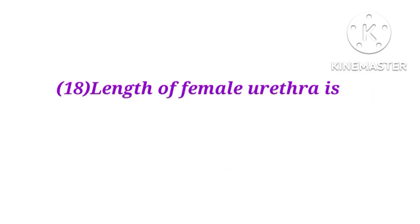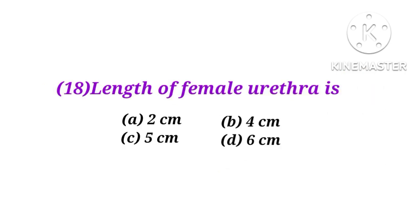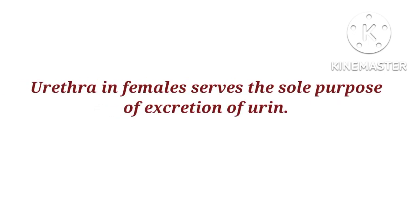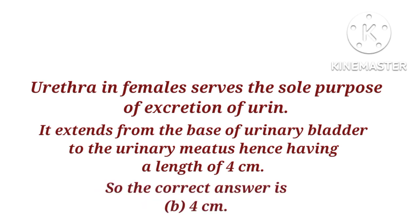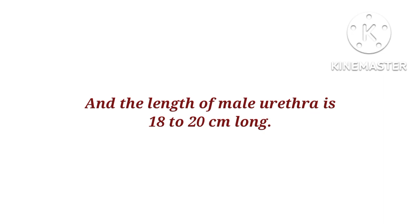Number 18. The length of the female urethra is 2 cm, 4 cm, 5 cm, or 6 cm? The urethra in females serves the sole purpose of excretion of urine. It extends from the base of the urinary bladder to the urinary meatus, having a length of 4 cm. The correct answer is 4 cm. The length of the male urethra is 18 to 20 cm.